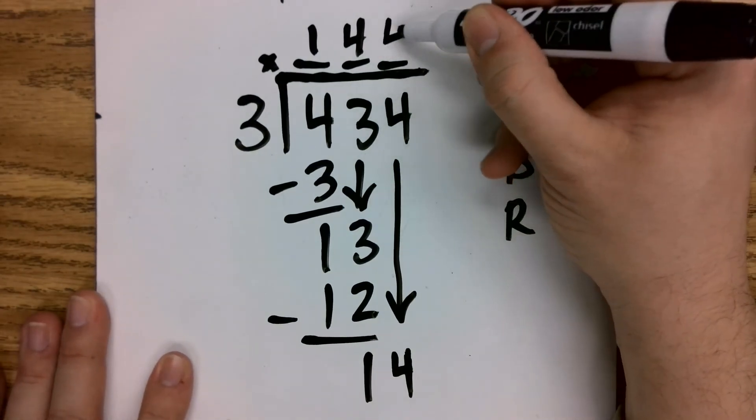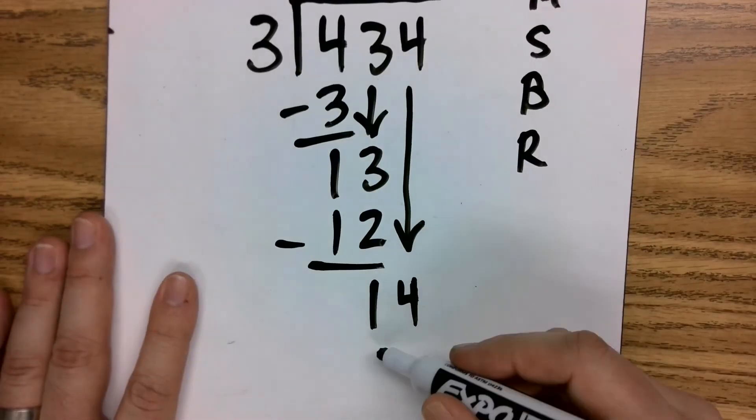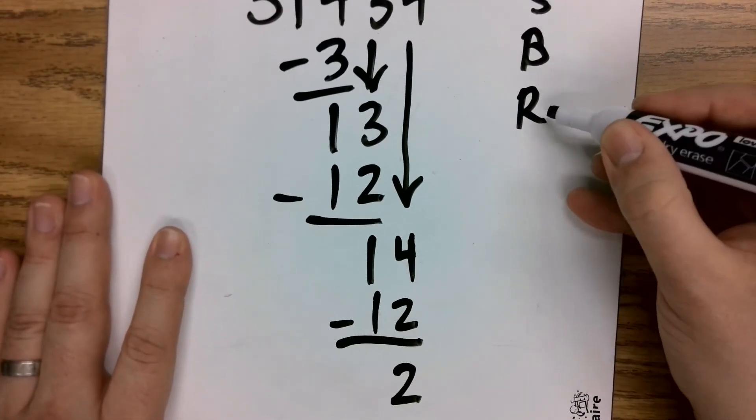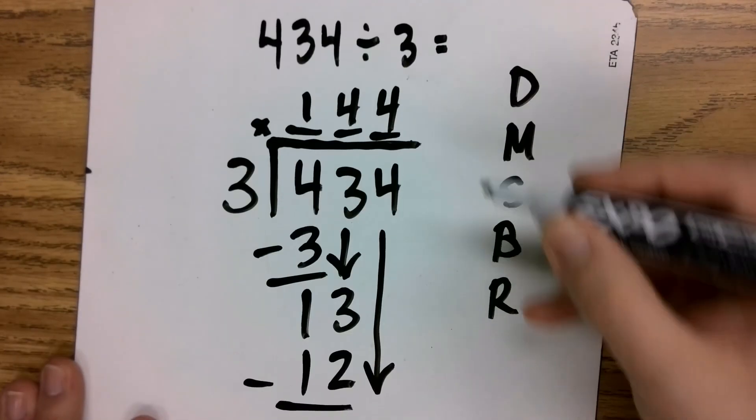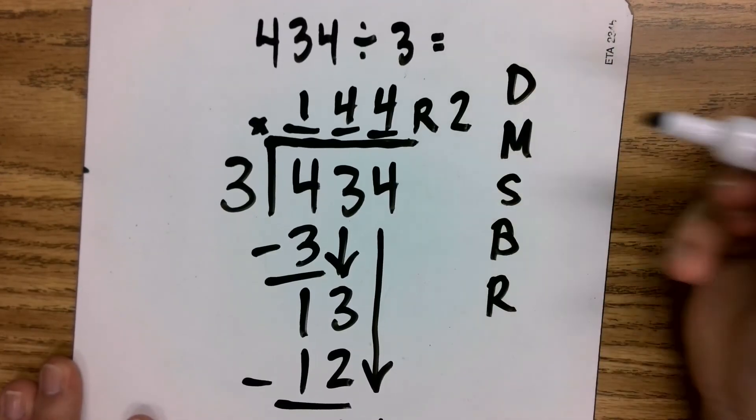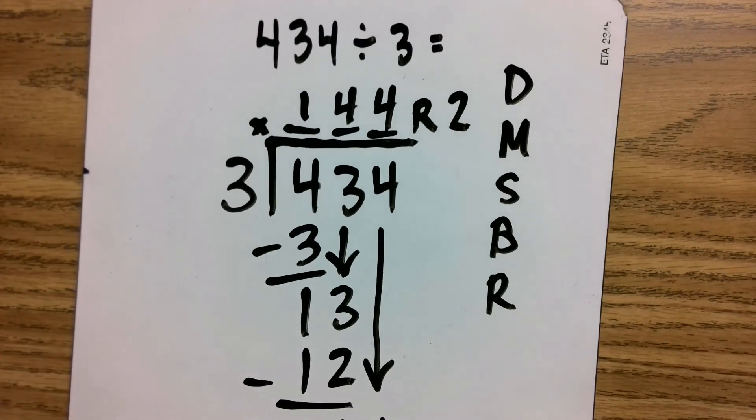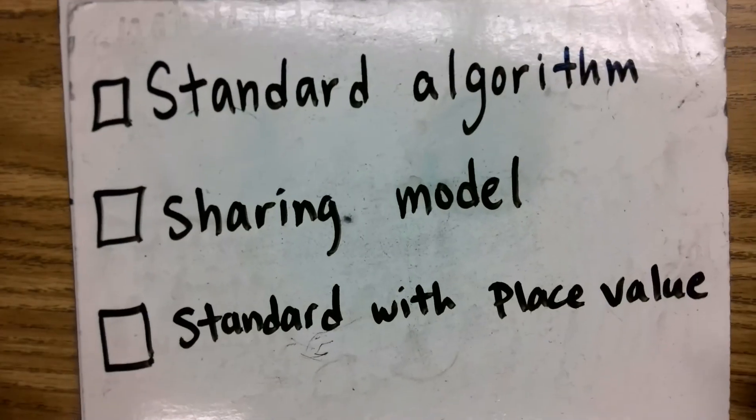That goes in 4 once again. 4 times 3 is 12. Subtract, and I am left with 2. This is where I have my remainder, and I will bring that up. My answer is 144 remainder 2. That's going to be the consistent answer to all of these models. Right here is the standard algorithm.